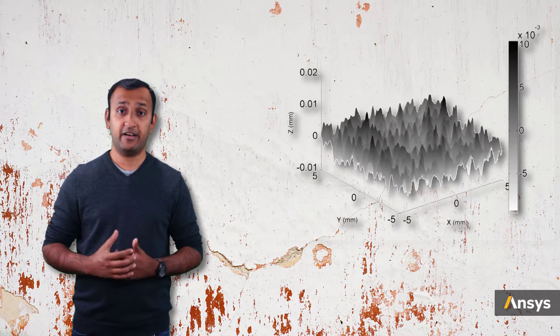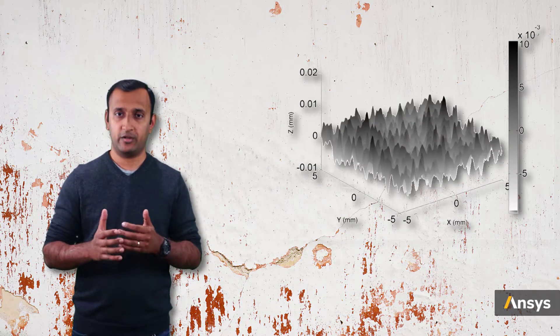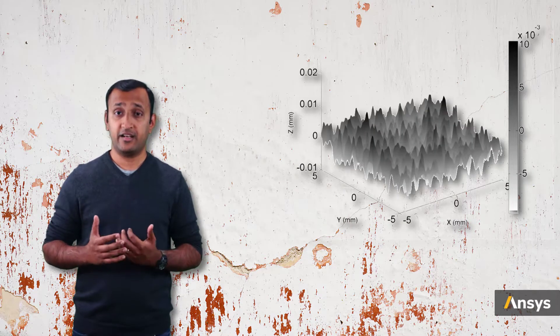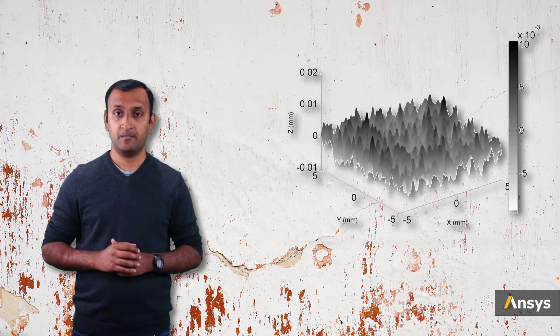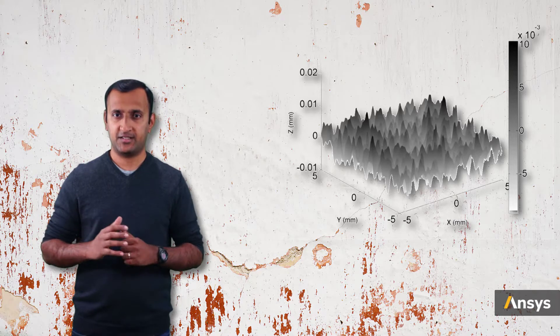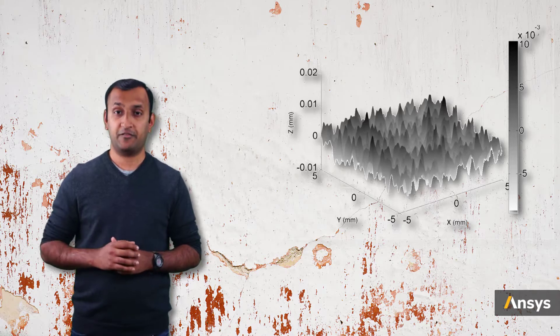All engineering surfaces have irregularities as we zoom into them. These irregularities are called asperities and they range at different scales. They also give rise to the surface roughness.